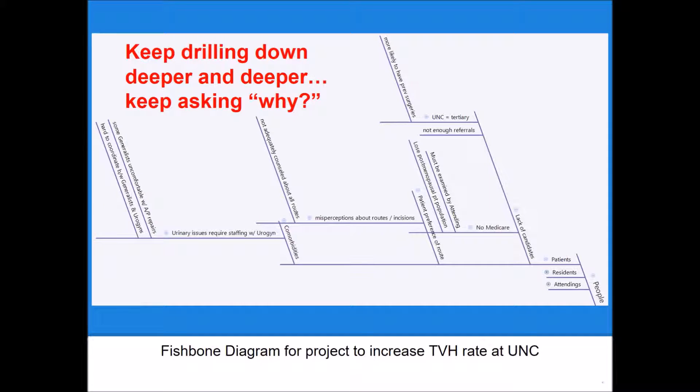So for instance, between the attendings, residents, and patients that might be contributing to lower than ideal TVH rates, when we brainstorm specifically about patients, we thought that since UNC is a tertiary care center, it's very possible that the patients that get referred to us are more likely to have had multiple previous surgeries, which might make them poor candidates for vaginal hysterectomies, and therefore that might decrease our overall number of TVHs.